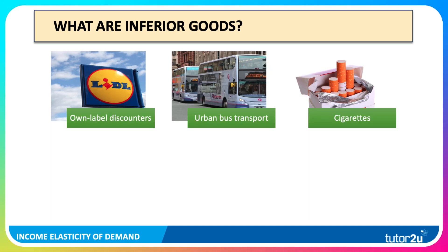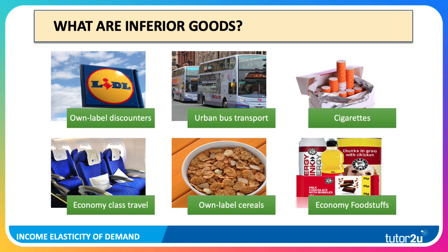There are no hard and fast rules as to what counts as inferior goods, but typically private label economy brands of food in supermarkets, urban bus transport, cigarettes, economy class travel on rail or bus, own-label cereals, and essential basic products you often see in the aisles of supermarkets would typically be counted by economists — depending on the data — as inferior goods.